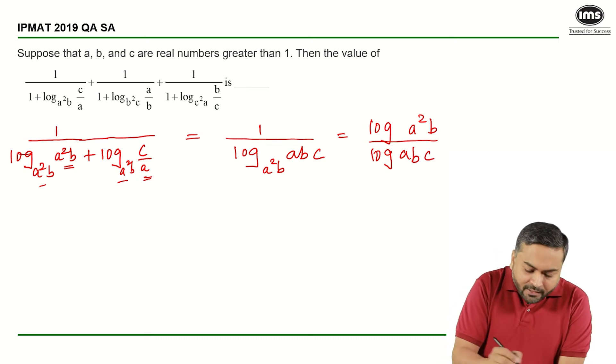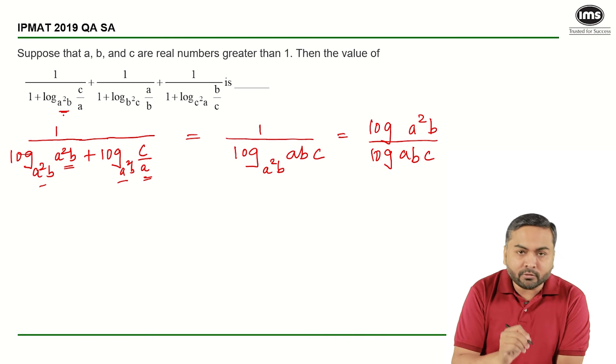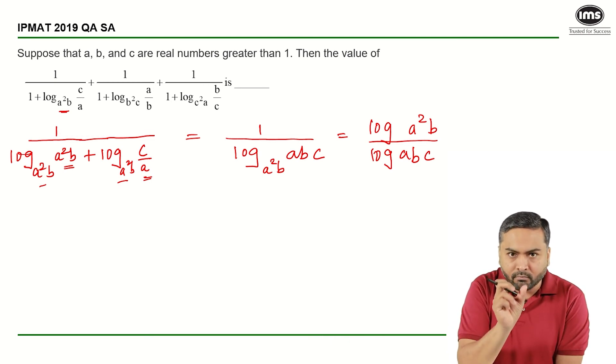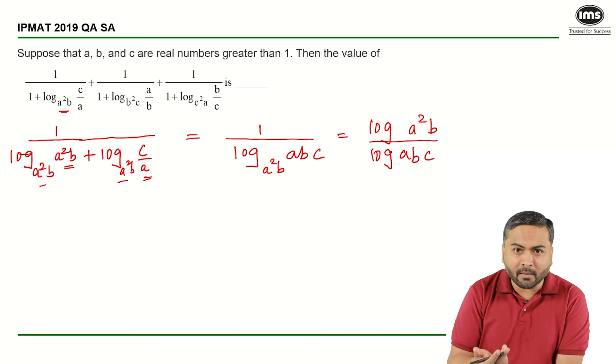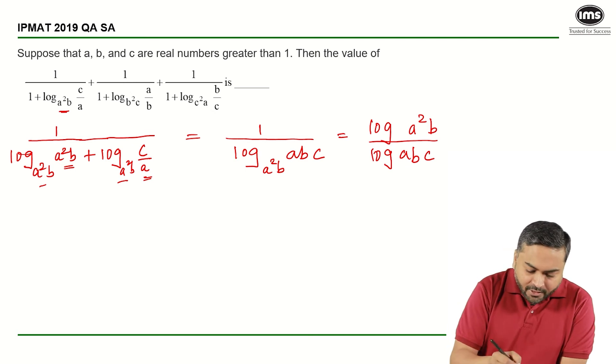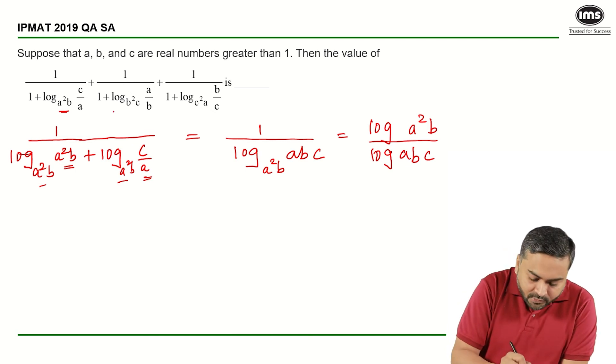Right, so what can I see? This particular base becomes log of, the log moves to the numerator and denominator becomes log abc. Similarly, if I look at the next term, what is the first term? First term is log of a square b upon log abc.